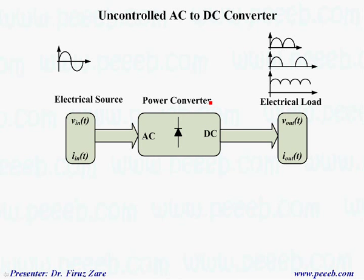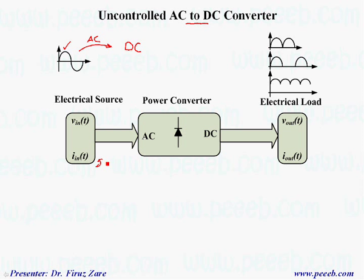When we talk about an uncontrolled AC-to-DC converter, that means we change the AC voltage into DC, but we cannot control the output voltage magnitude. There are different topologies we can use, either single-phase or three-phase, but the output voltage depends on the topology and input voltage magnitude. This type of converter operates at line frequency of 50 or 60 Hz.